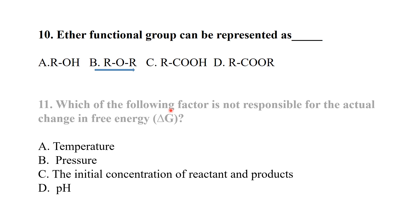Which of the following factors is not responsible for the actual change in free energy (delta G)? pH has no role in the actual change in free energy. This is from the bioenergetics chapter — a general bioenergetics question.